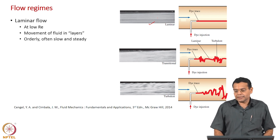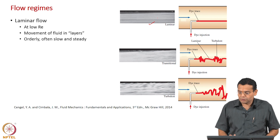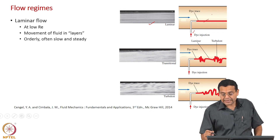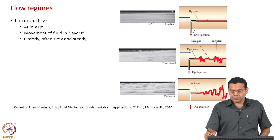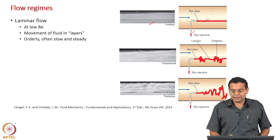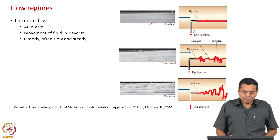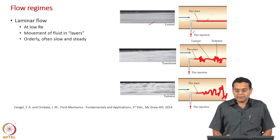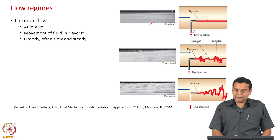How do we measure streak lines? By injecting a dye — that is what is shown here. When the flow is laminar, you get a smooth streak line without any disturbance. So if you want to visually confirm laminar flow, inject a dye and if you observe a defined, smooth line without disturbance, you can conclude the flow is laminar.